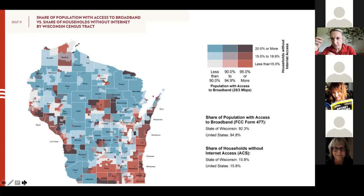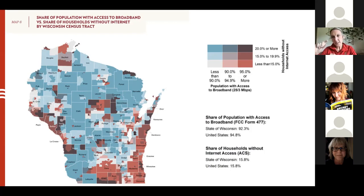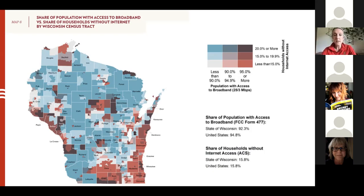The darkest areas on the map show places where the FCC says access exists, but the American Community Survey indicates households aren't subscribing - a significant portion say they do not have internet. One possible answer is affordability: broadband is available but not affordable to households. Affordability and adoption are also key components of increasing broadband access. Less than one quarter of federal spending on rural broadband expansion has gone towards affordability and adoption.